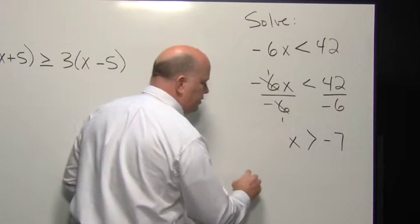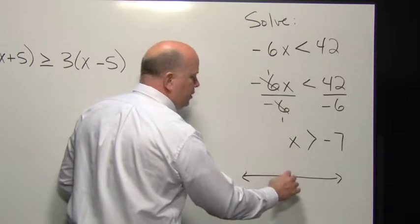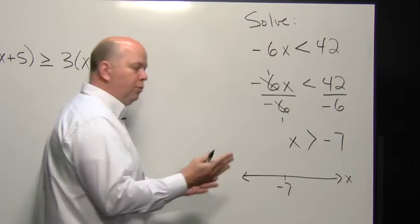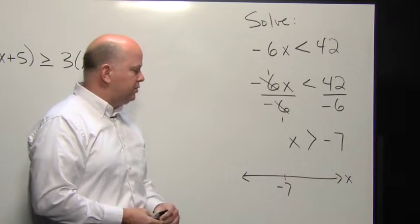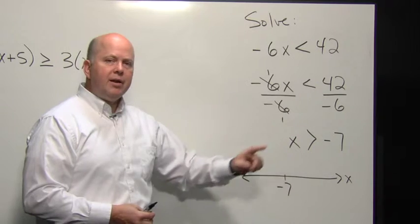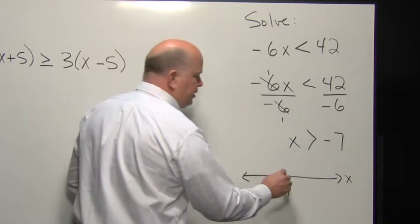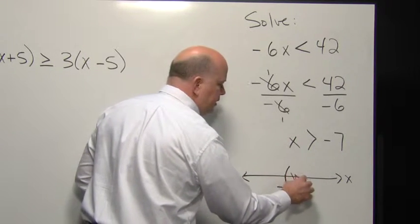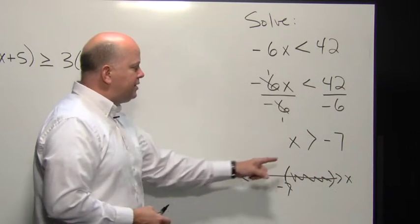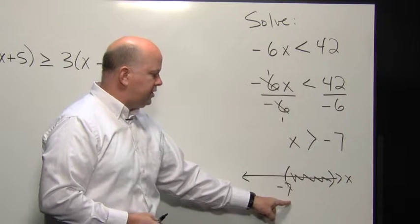Often we want to graph this solution set. Negative seven is the only value we're really concerned about in terms of this graph. We see that X has to be greater than negative seven, so we have to shade to the right of negative seven. And because it's not equal to, we have a parenthesis.